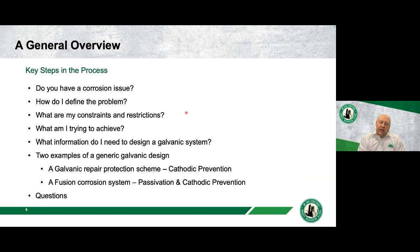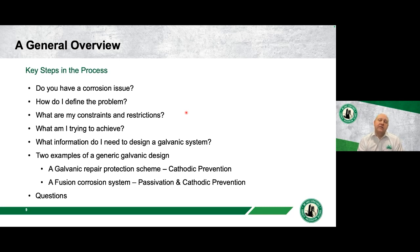To start, I want to break the design process down into different stages. The first stage is: do we have a corrosion issue? We then look at other constraints that can be commercial rather than technical. We think about what we're trying to achieve, then do the galvanic system design. I'll go through two specific examples: galvanic repair protection, which we call cathodic prevention, and a fusion protection scheme — a two-stage process involving passivation and then cathodic prevention.